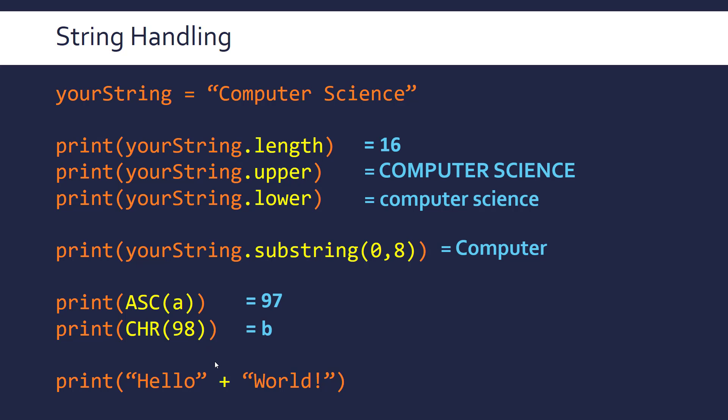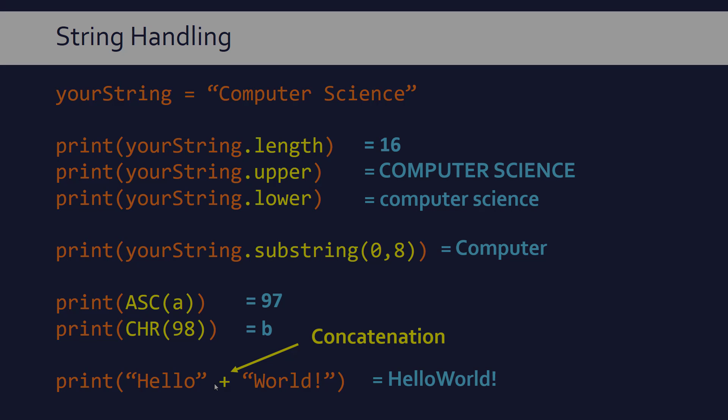And then finally the concatenation operator, which is a more traditional operator, is usually done with a plus. And this is an example of two operators essentially being overloaded, i.e. one is for addition and one is for string handling. So depending on the data type, a different result happens. So this just puts together the two words.